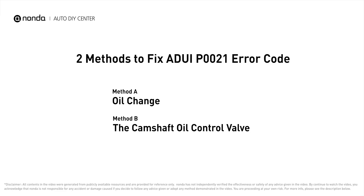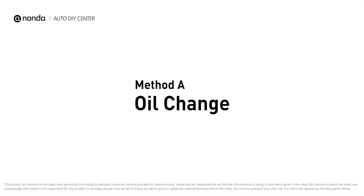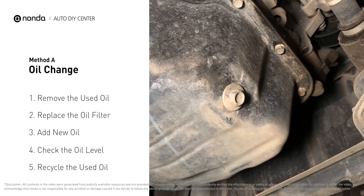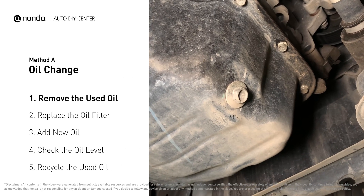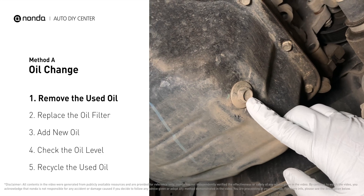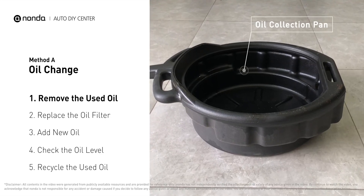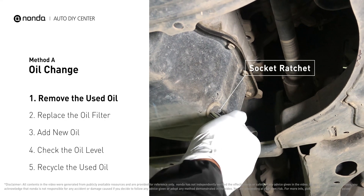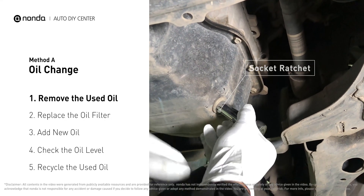Here are two of the most practical solutions to fix Audi's P0021 error code. Method A – Oil Change. Locate the oil drain plug on your vehicle and place an oil collection pan underneath it. Use a socket ratchet to remove the plug from the oil pan on your vehicle.